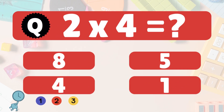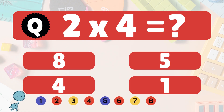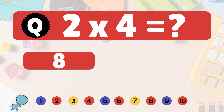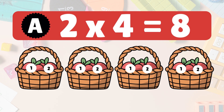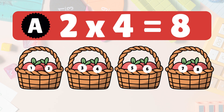Next, 2 times 4 is what? 2 times 4 is 8. Here we have 4 groups of 2 apples each. Let's count them all: 1, 2, 3, 4, 5, 6, 7, 8. So 2 times 4 is 8 apples.